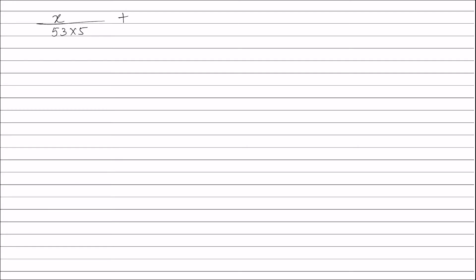This gives us: (x/53) × (1/5) + (1.22 − x)/69 × (1/5) = equivalents of HCl. Equivalents of HCl equals normality of HCl (0.1 N) multiplied by volume of HCl in liters, which is 40/1000 liters.